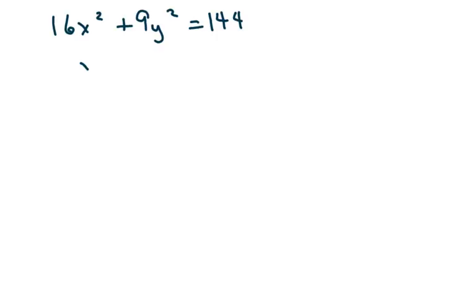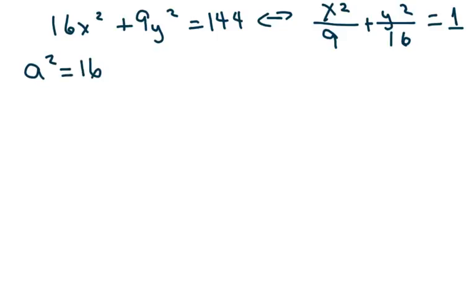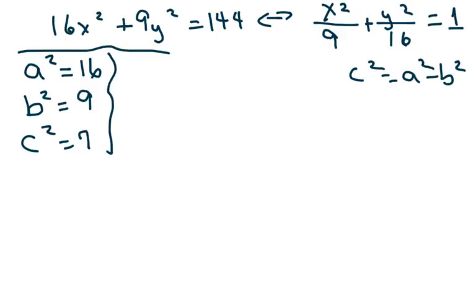Okay? The next one is we have an ellipse, so we're going to rewrite this and divide everything by 144. Since 16 times 9 is 144, I can just do this simply. The center is 0, 0, so it makes it easy. And then we do what we did in the other videos. Just write down our A squared is the big number. B squared is your smaller number. Then you subtract because C squared equals A squared minus B squared, which equals 7. Therefore, A equals plus or minus 4. B equals plus or minus 3. And square root of 7 would be your C.